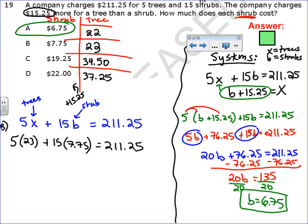So, I'm plugging in the prices from answer choice B into that very first statement that they gave me, because that's an equation, you see that right here, and see if it works. Well, five times 23, since I have a calculator, that's going to give me 115, and 15 times 7.75 is 116.25, and I need to see if that's equal to 211.